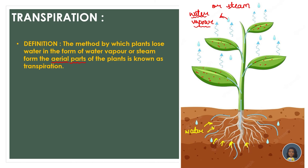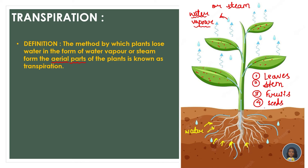There is a key term in this definition — 'aerial parts.' Aerial parts basically refers to the structures of the plant above the ground. For example, in this diagram we can see leaves — leaves are aerial structures. The stem is also an aerial structure. If there were a fruit it would also be considered an aerial structure, as would seeds.